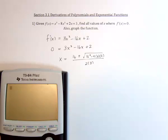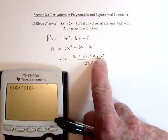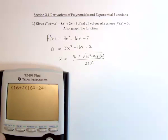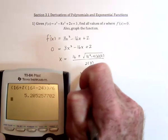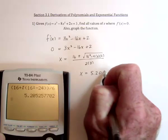So we'd have 16 plus, I should use parentheses, the square root of 16 squared minus 12 times 2, 24, and then close the parentheses twice and divide by 6. So one possibility is that x equals 5.205.